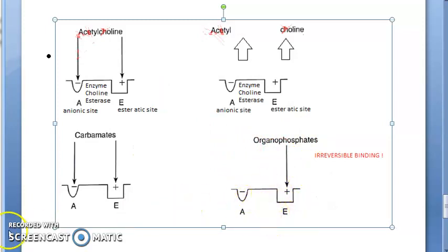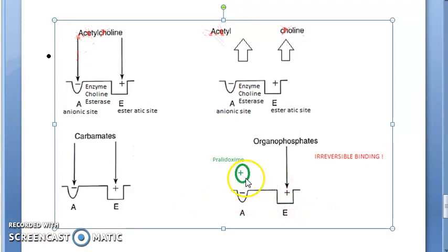Just observe this diagram. Pralidoxime is positively charged. It will bind to the anionic side, then what it will do is it will bind to the phosphate that is bound to this esteratic site, then it takes away the oxime phosphate. Then those two will diffuse away from the cholinesterase and cholinesterase will get reactivated.